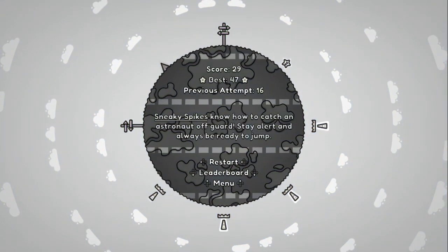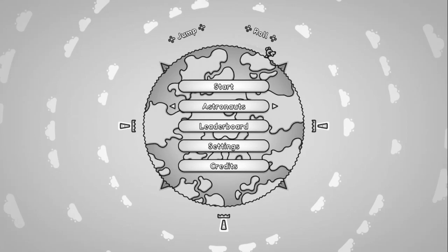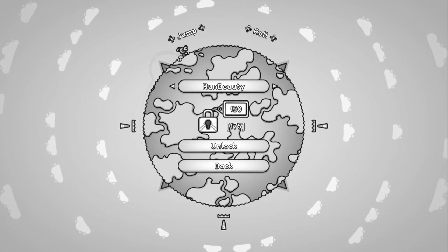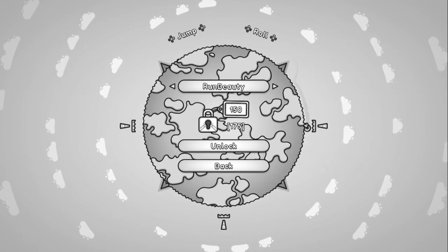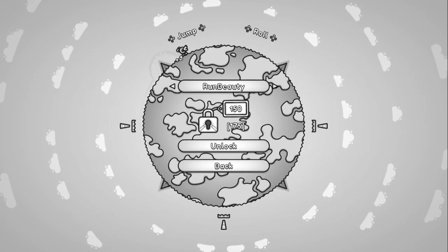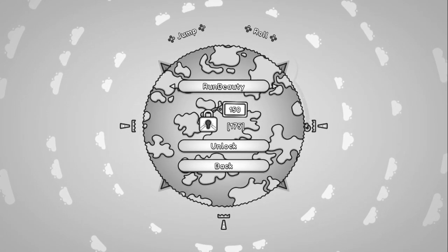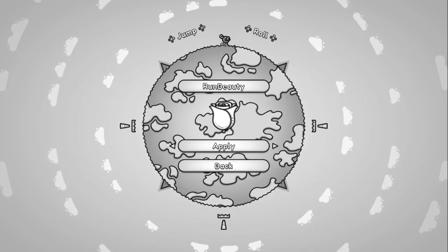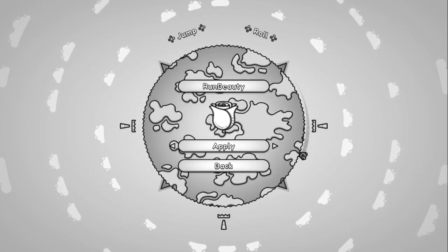If I go to Menu, if I go to Astronauts, now I have 175 points. So I can actually unlock Run Beauty or Run Beak. I'll go ahead and do Run Beauty, unlock, apply. Sure, I'll play as Run Beauty.